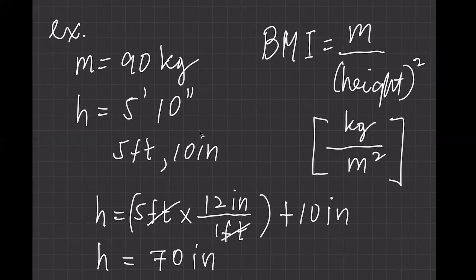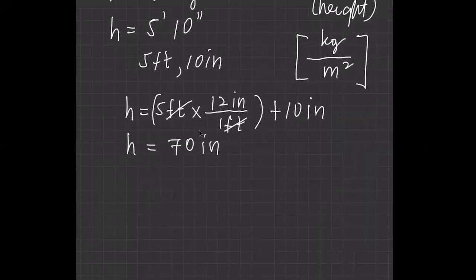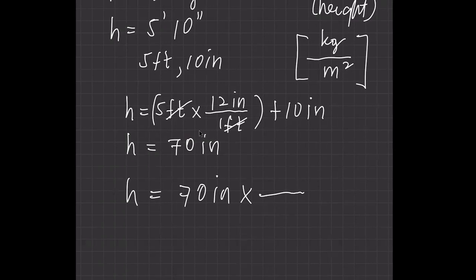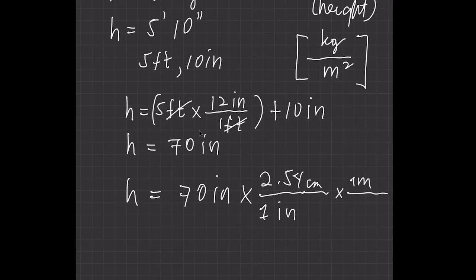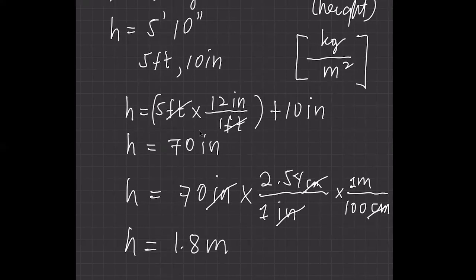We still need to convert 70 inches to meters. One inch equals 2.54 centimeters, and one meter equals 100 centimeters. Canceling units, height equals 70 times 2.54 divided by 100 — use your calculator to verify — which gives approximately 1.8 meters.